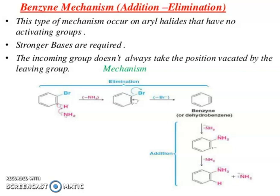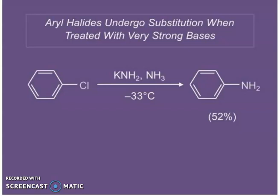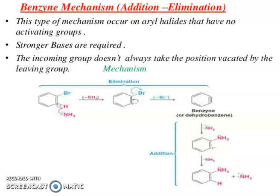Benzyne contains a triple bond. The reaction proceeds by two-step elimination and two-step addition, forming aniline from chlorobromobenzene. This is an elimination-addition reaction. The title should reflect this: it is elimination then addition. The conversion is 52%.